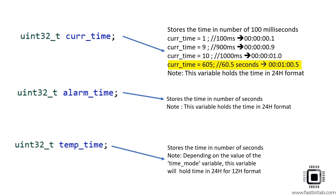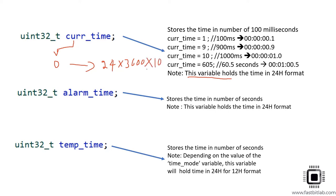If current_time equals 605, that means 60 into 5 seconds: 60 seconds means 1 minute, so the minute field shows 1, and 0.5 seconds means 500 milliseconds, so the sub-second field shows 5. This variable holds the time in 24-hour format, meaning it holds time from 0 to 24 hours. To convert 24 hours into the number of 100-millisecond units: 1 hour is 3600 seconds, multiplied by 10. When this value reaches the maximum, the current_time rolls back to zero.